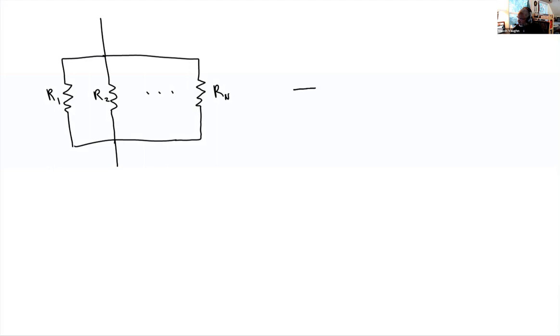We could replace those n resistors with a single equivalent resistor. The thing about resistors in parallel is the equivalent resistance is equal to the reciprocal of the sum of the reciprocals of each of the resistors that are in parallel.